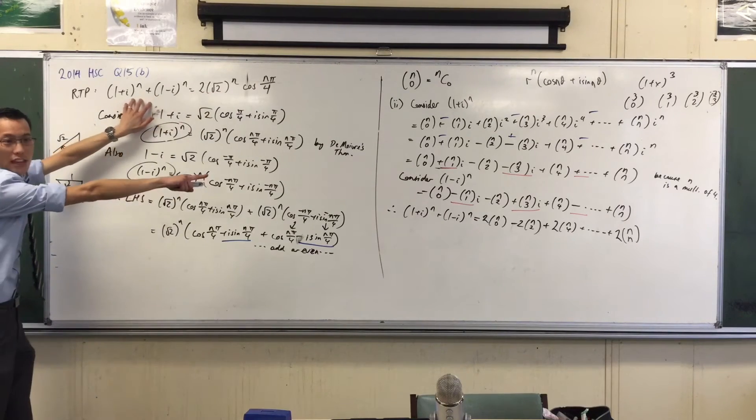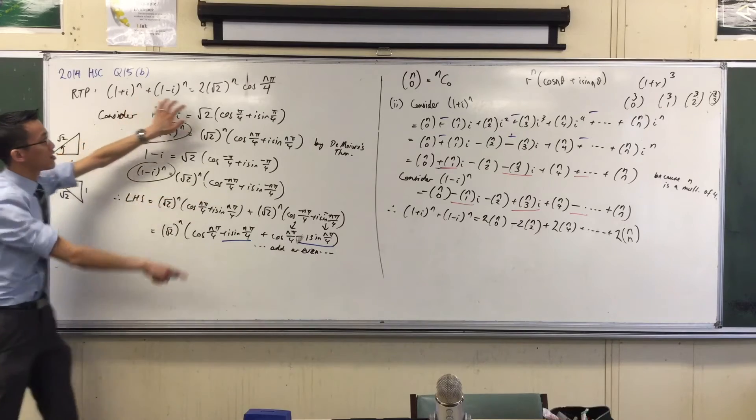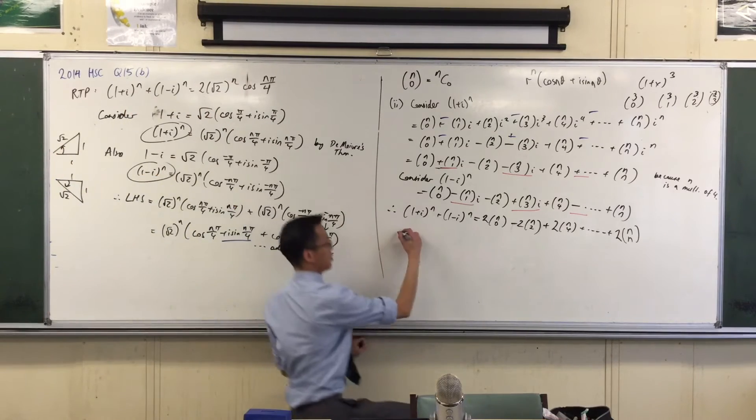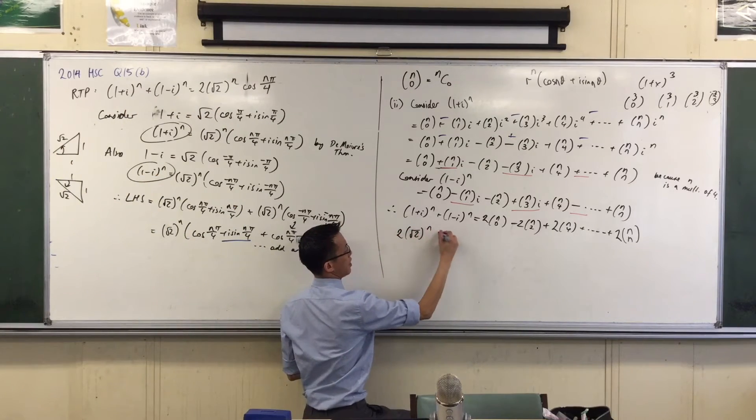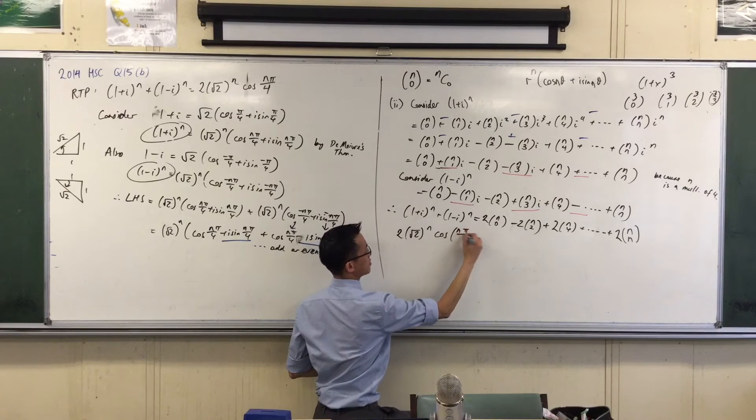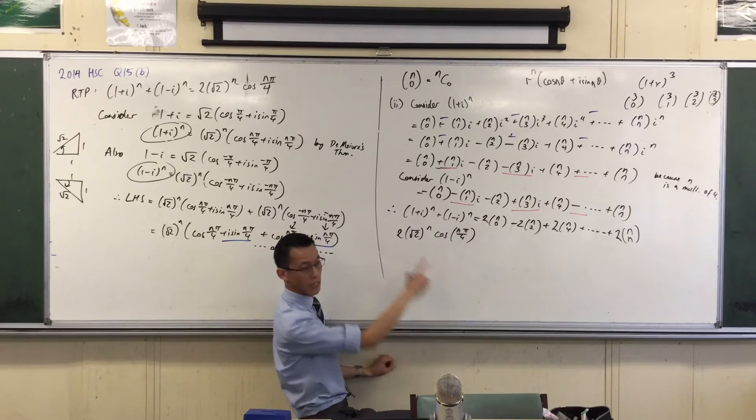I found that this was this. Well, this is exactly what's on the left-hand side. Do you see it? So I can just switch it for this. I can write 2 root 2 to the n, this cos whatever business, right? That thing. Yeah? See that?